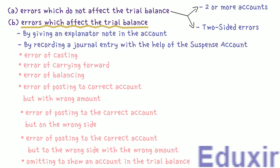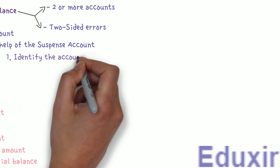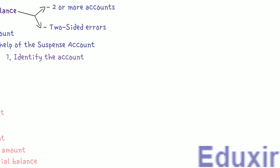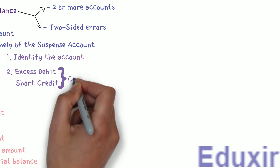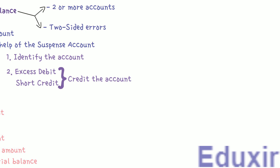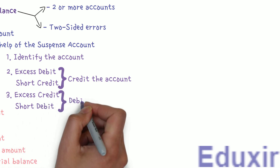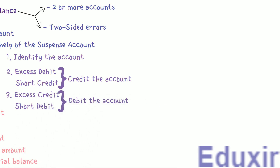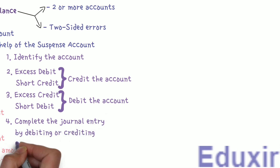The steps involved in rectifying the one-sided errors using the suspense account are as follows. Identify the account affected due to the error. Ascertain the amount of excess debit or credit or short debit or credit in the affected account. If the error has resulted in excess debit or short credit in the affected account, we have to credit the account with that amount. If the error has resulted in excess credit or short debit, we have to debit the account with that amount. We use the suspense account to complete the journal entry by debiting or crediting the suspense account as the other account affected.